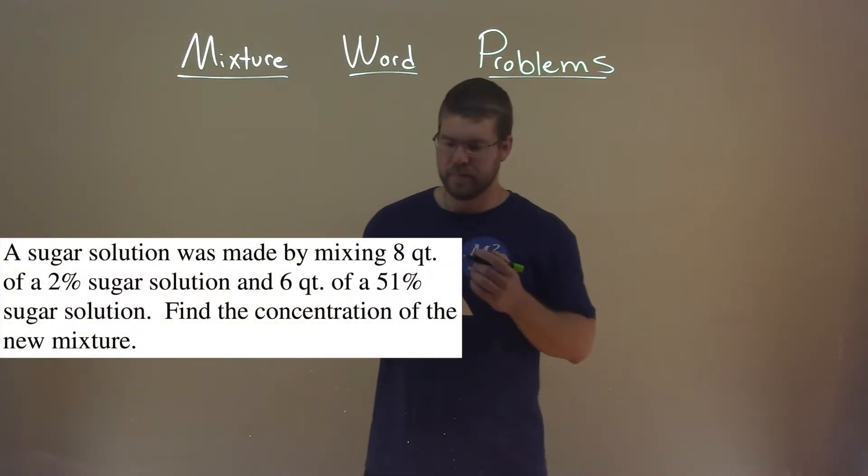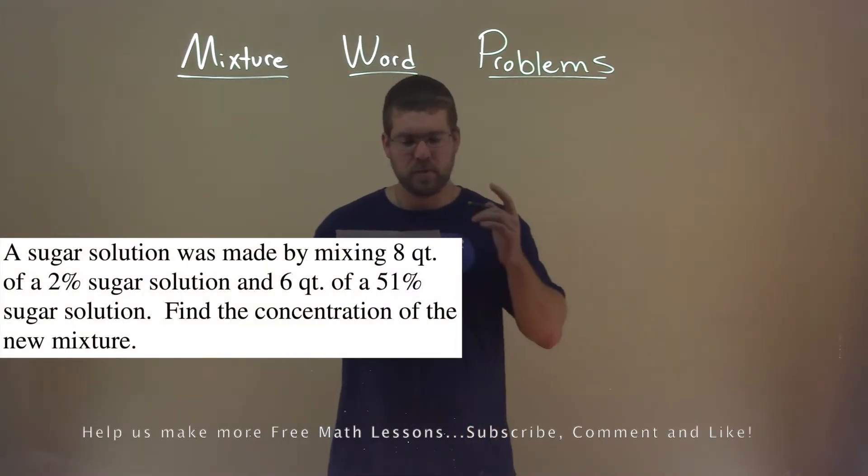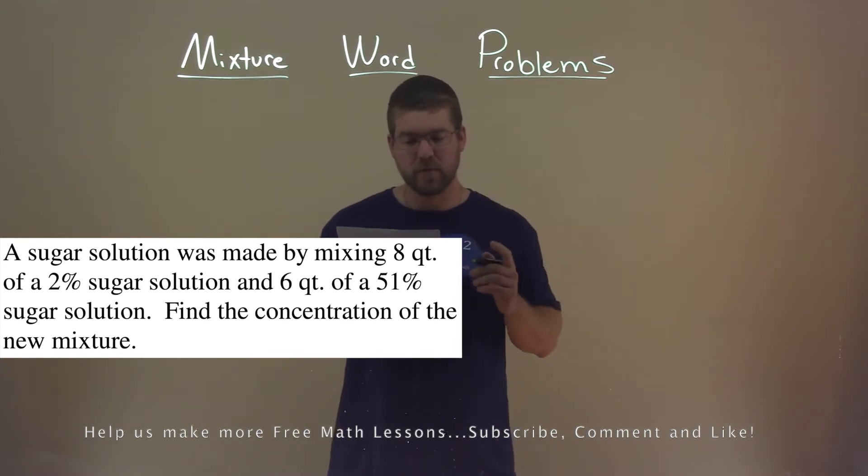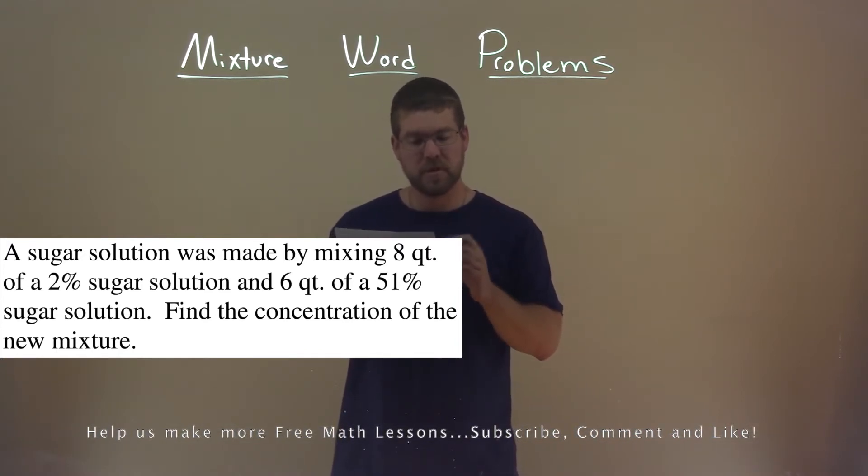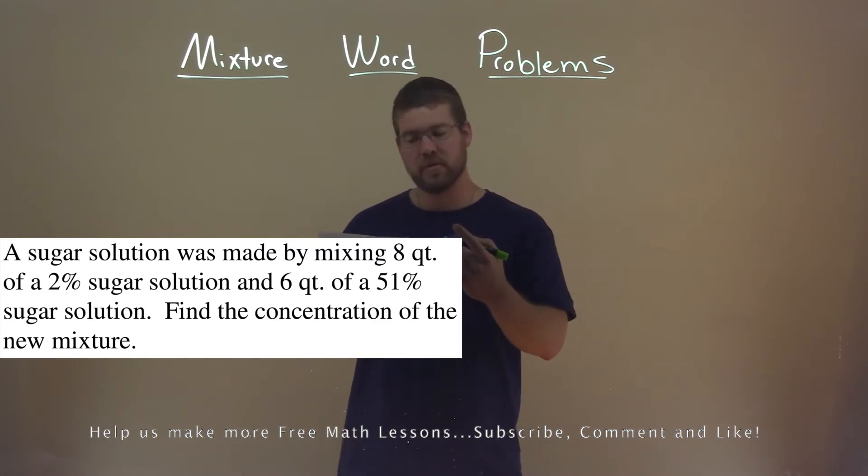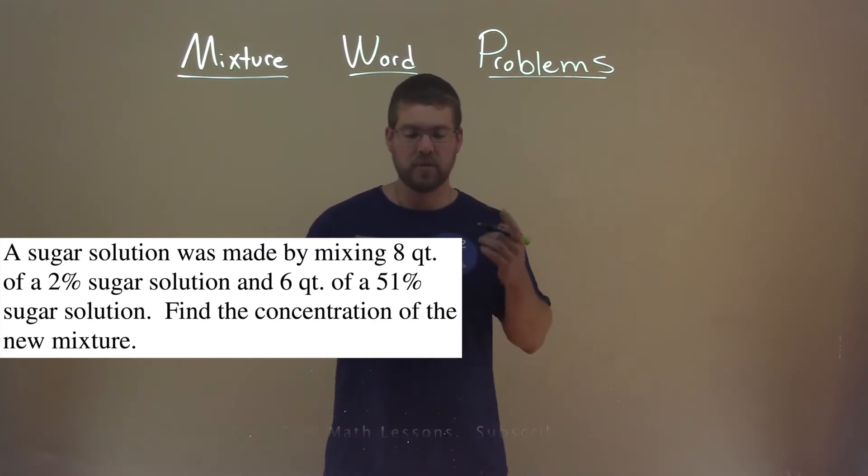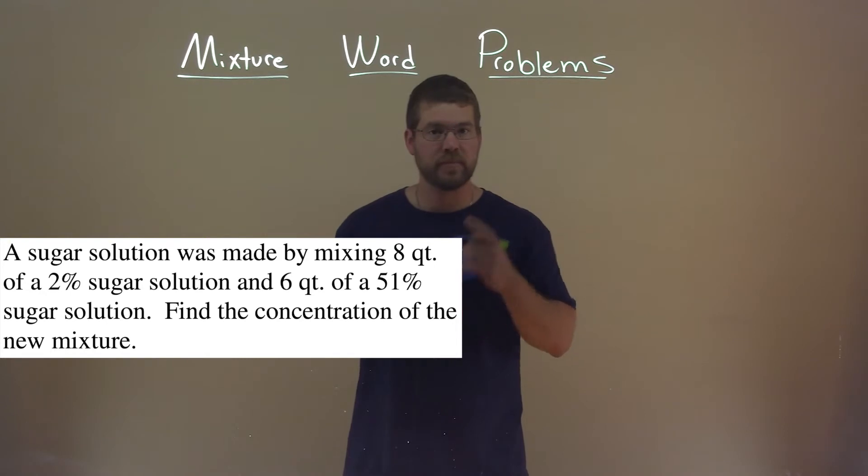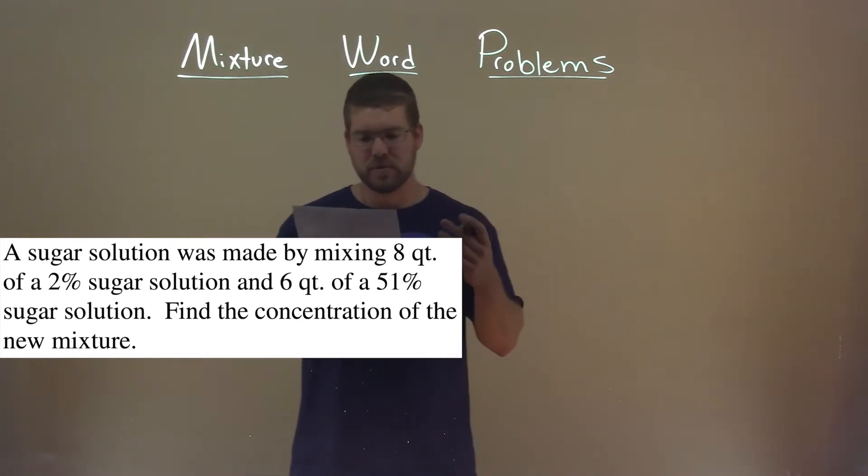We're given this problem right here. A sugar solution was made by mixing 8 quarts of a 2% sugar solution and 6 quarts of a 51% sugar solution. Find the concentration of the new mixture. So we have our sugar solution here.